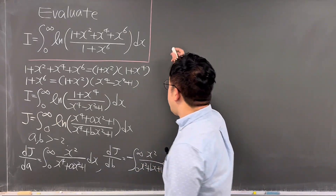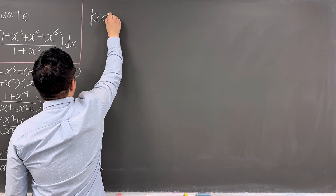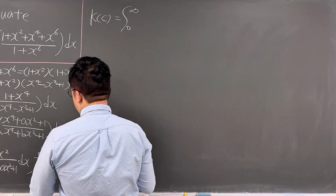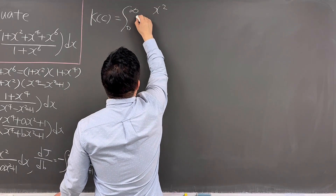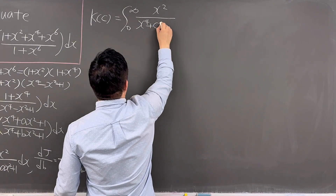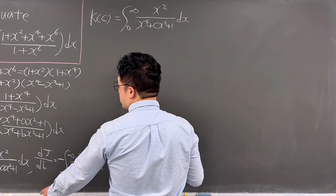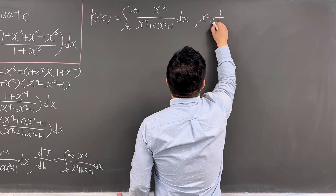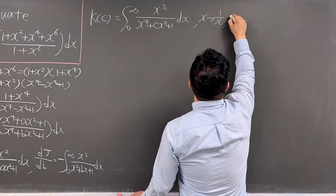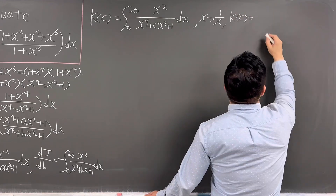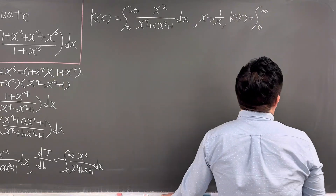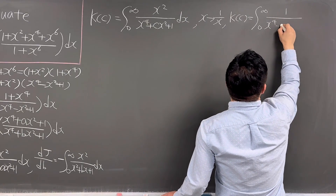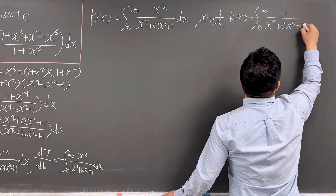About these integrals, we have a well-known integral. Let me call that K(c), where K(c) is the integral from 0 to infinity of x² / (x⁴ + cx² + 1) dx. And if we let x → 1/x, then we can rewrite K(c) as the integral from 0 to infinity of 1 / (x⁴ + cx² + 1) dx.